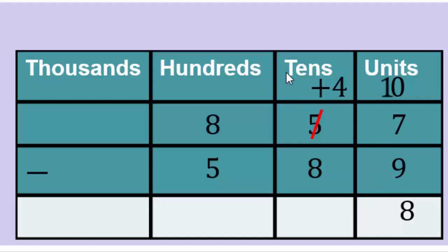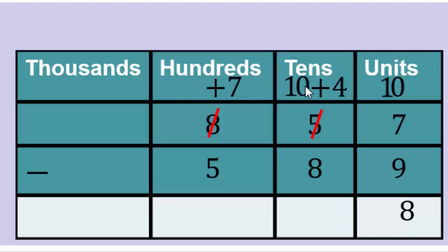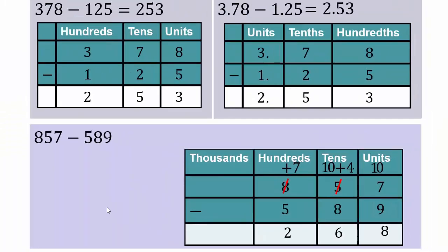Now we have 4 tens and need to subtract 8 tens from it. So we use the place value system again: break the 8 hundreds as 1 plus 7, unbundle that 1 hundred into 10 tens, giving us 10 plus 4 equals 14 tens. Subtracting 8 tens leaves 6 tens. Then 700 minus 500 leaves 200. Our final answer is 268.